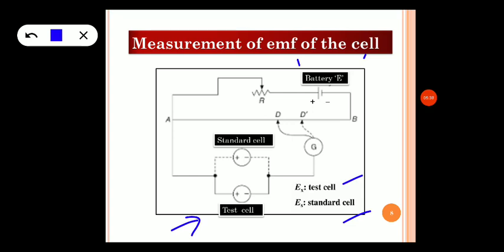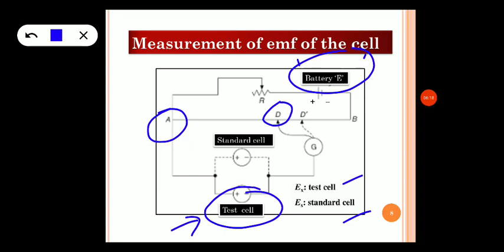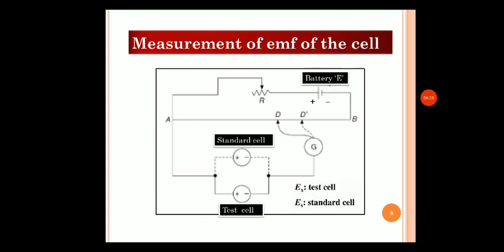The two terminals of the battery E — which has a constant and higher EMF than the test cell — are connected to the wire AB which has high resistance. The positive terminal of the battery is connected to terminal A, and the negative terminal is connected to the sliding contact D through the galvanometer. The test cell, whose EMF is less than the battery, is connected first, and the sliding contact is moved along the wire AB until the null point is reached.